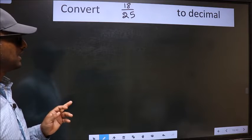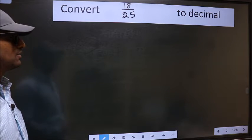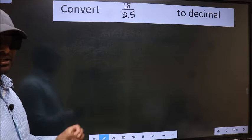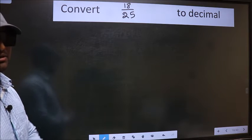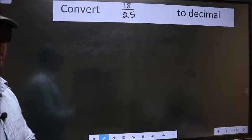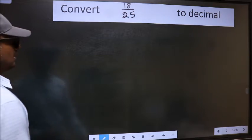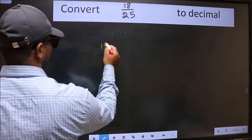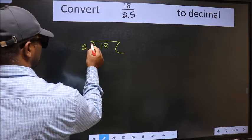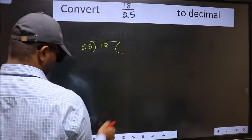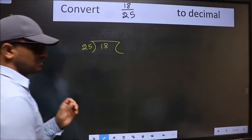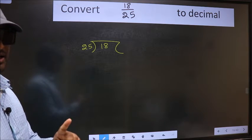Convert 18 by 25 to decimal. To convert to decimal, we should divide it. And to divide it, we should frame it in this way: 18 here and 25 here. This is your step 1.